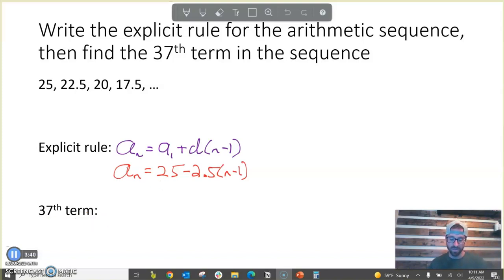To find the 37th term in the sequence, in other words, to find a sub 37, we do 25 minus 2.5 to the n minus 1. We just substitute 37 in for n, because that n represents the position in the sequence.